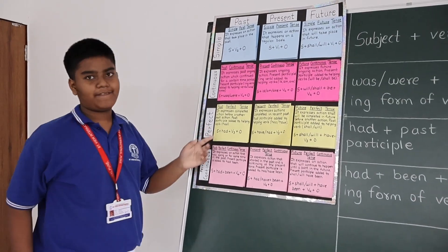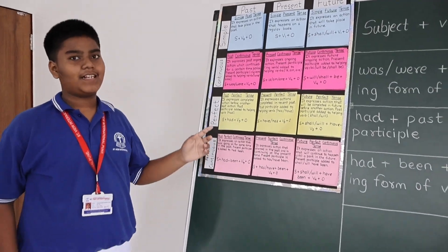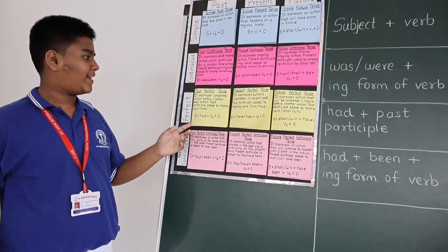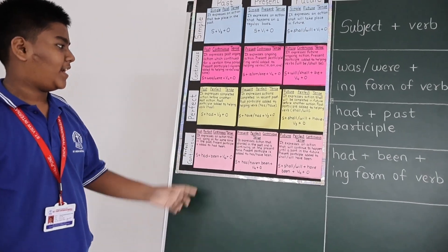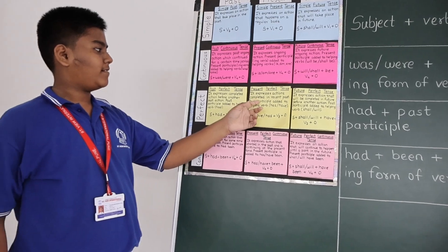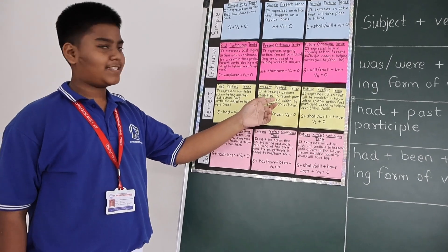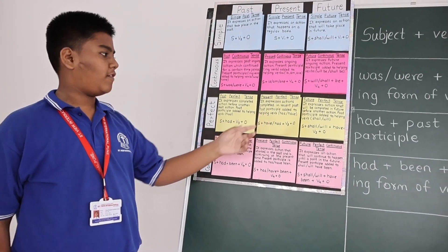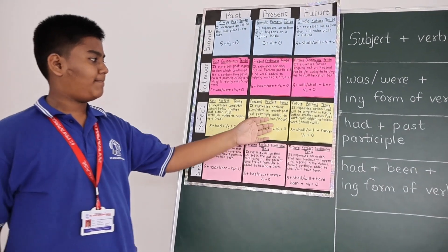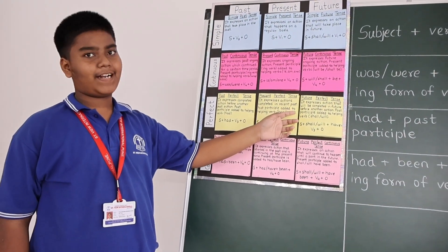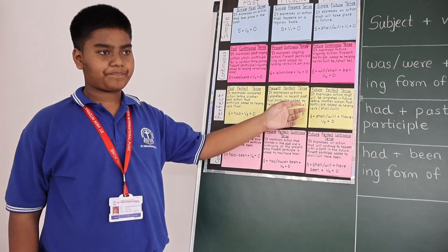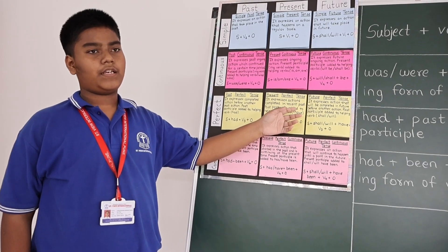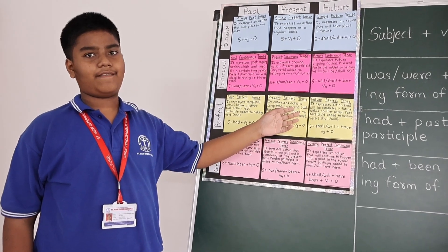Samuel, please come ahead. The example of past perfect tense is: the train left at 9am. The example of present perfect tense is: I have done all my homework. The example of future perfect tense is: he will have arrived.